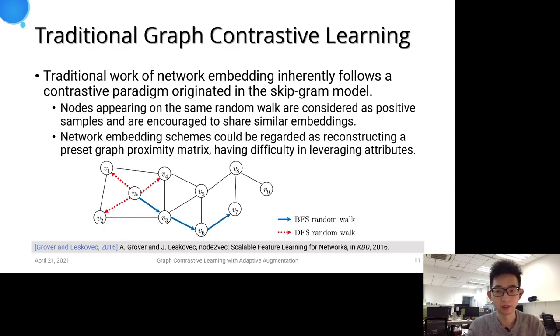Unlike visual representation learning, the traditional work of network embedding inherently follows a contrastive paradigm, which is originated in the skip-gram model. To be specific, nodes appearing on the same walk are considered as positive samples. For example,